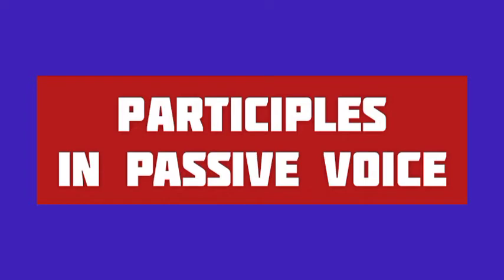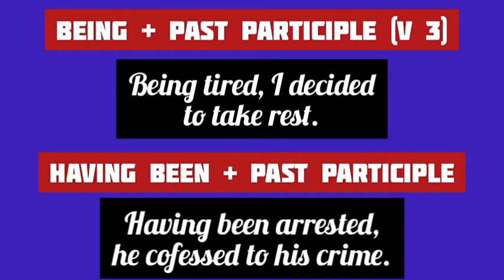Let's learn how participles are used in the passive voice. In the passive voice, we use the past participle or the third form of the verb after being. Similarly, we use the past participle after having been — this is the passive use of the perfect participle. For example, being tired, I decided to take rest — being tired is the passive use of past participle tired. Having been arrested, he confessed his crime — this is the passive voice use of the perfect participle.